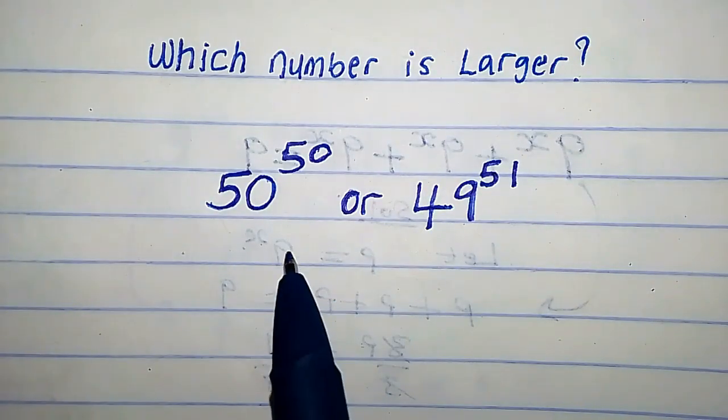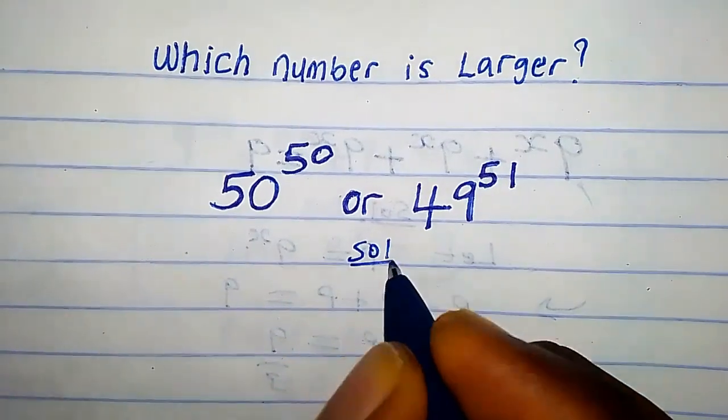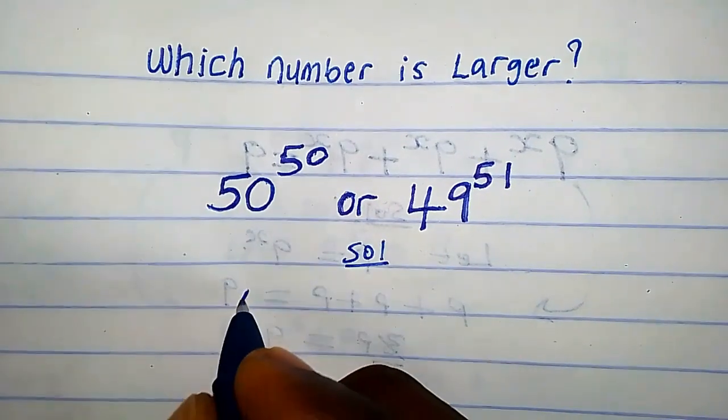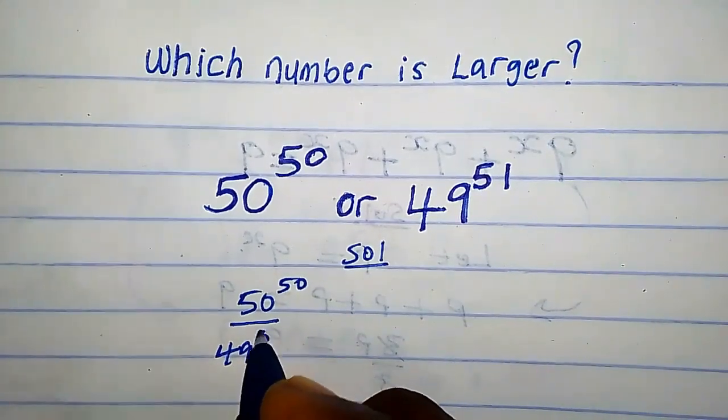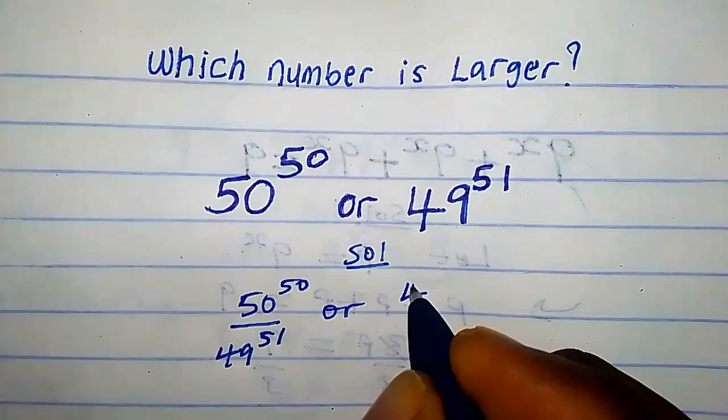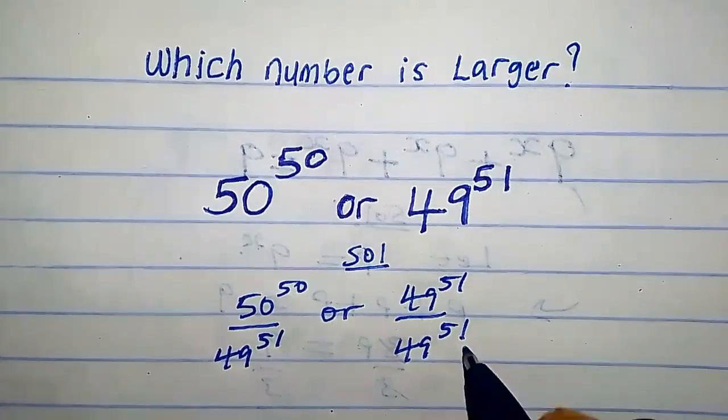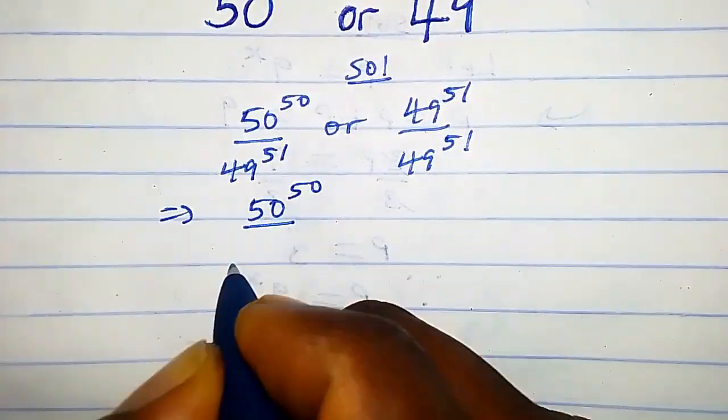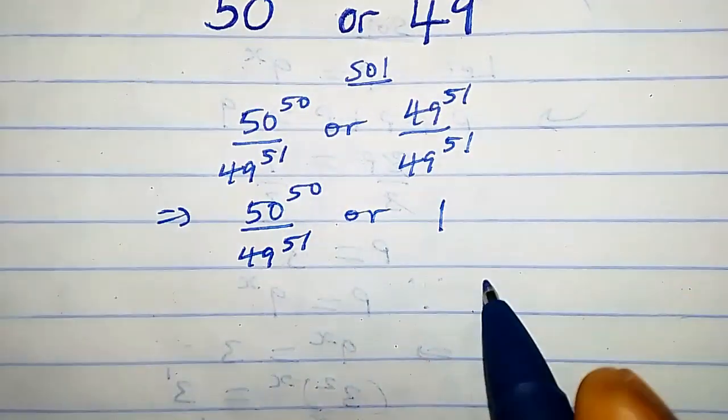Which number is larger, 50 to the power 50 or 49 to the power 51? Solution: Let's divide both sides by 49 raised to power 51. We're going to have 50 raised power 50 over 49 raised power 51, or 49 raised power 51 over 49 raised power 51. This implies 50 raised power 50 over 49 raised power 51, or one, because this takes care of this.